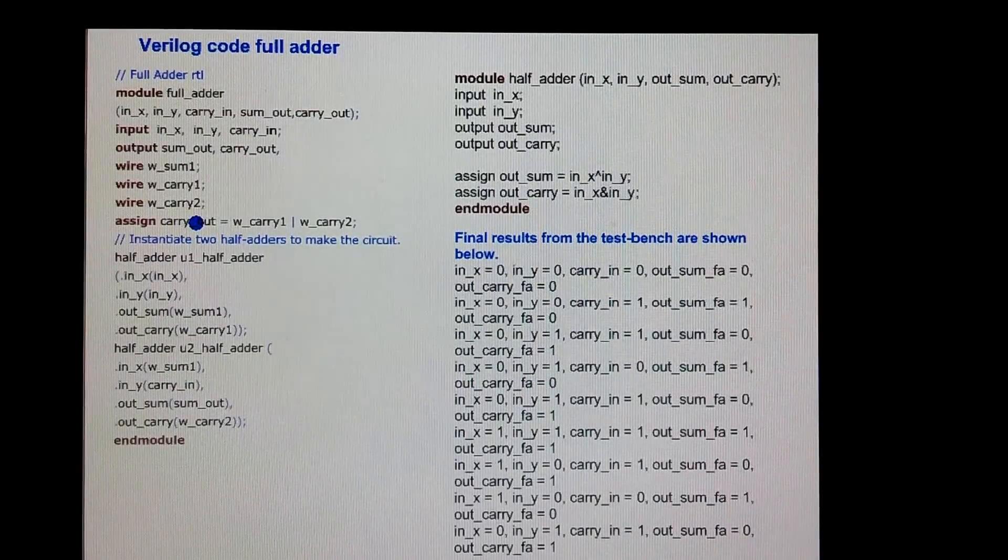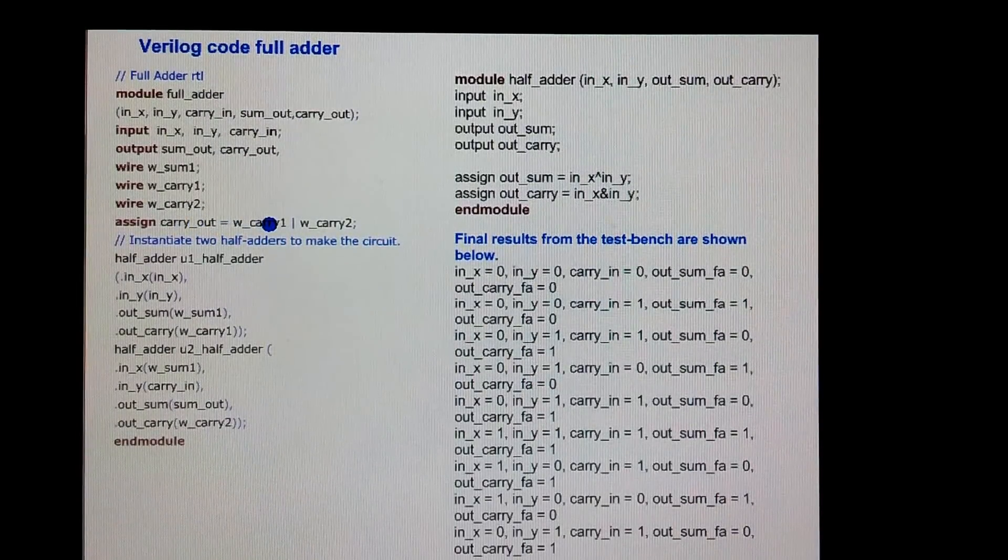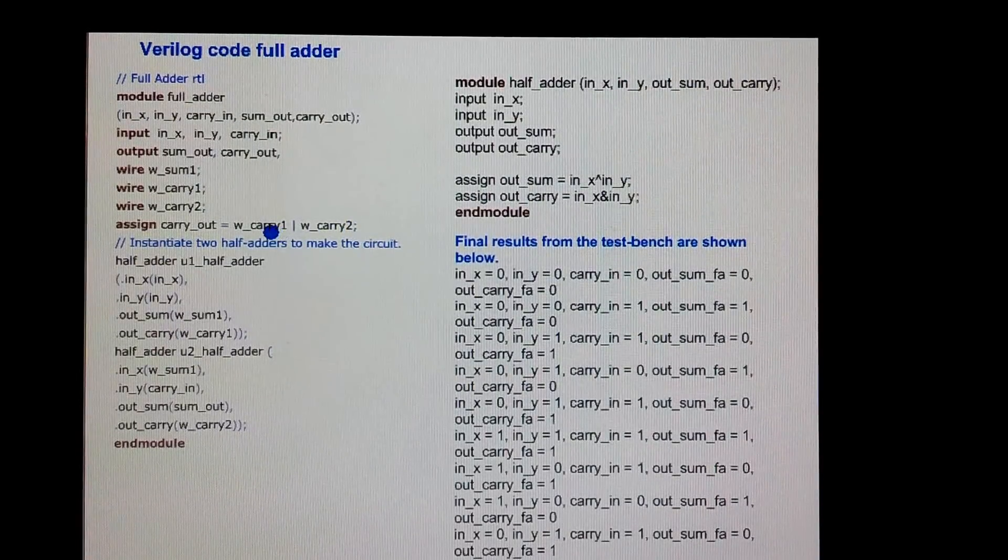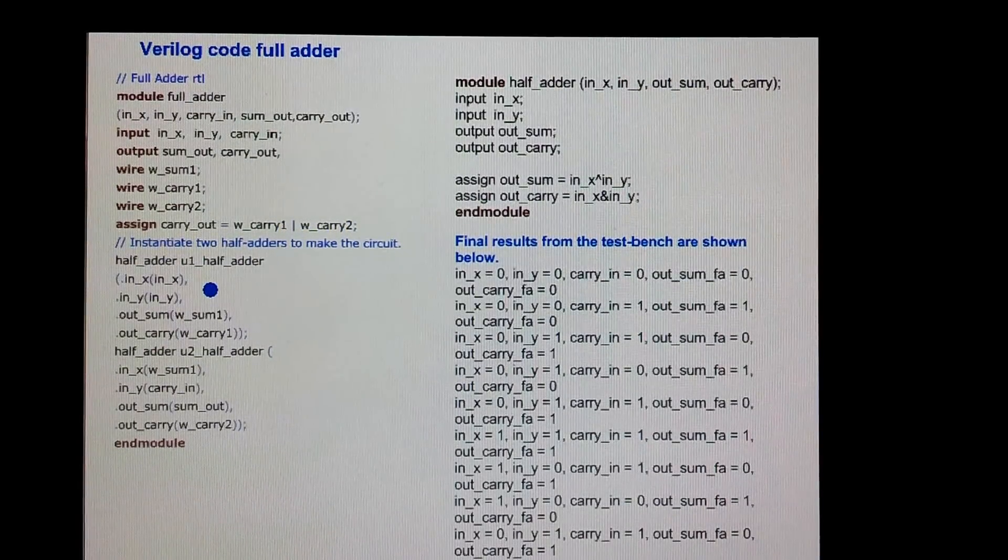The carry out is basically an OR of two carries as shown in the previous circuit. The two carries are generated by two half adders.